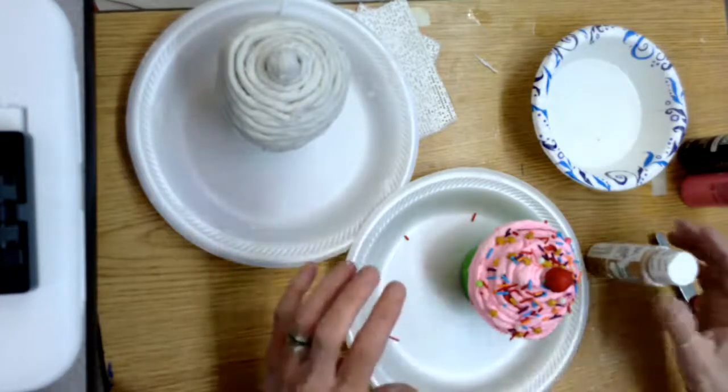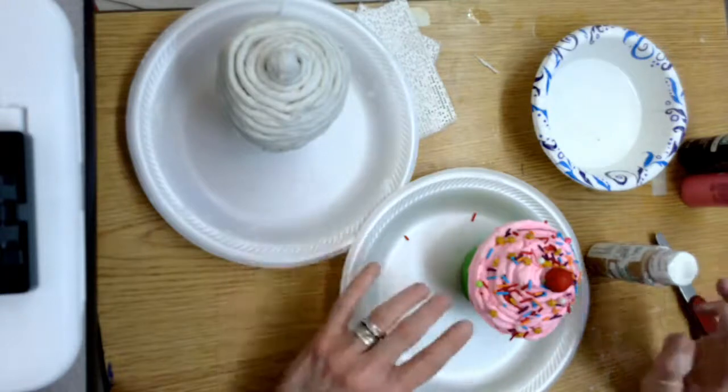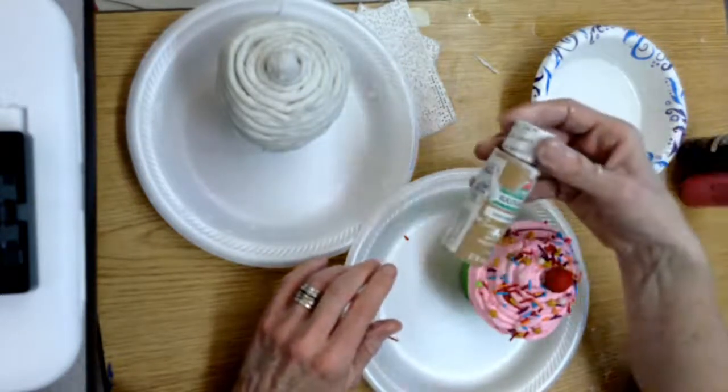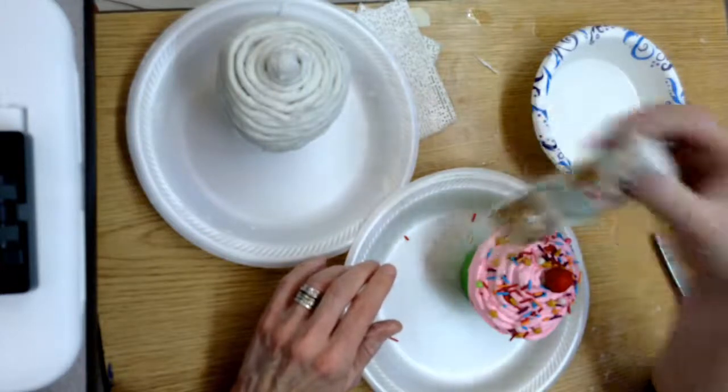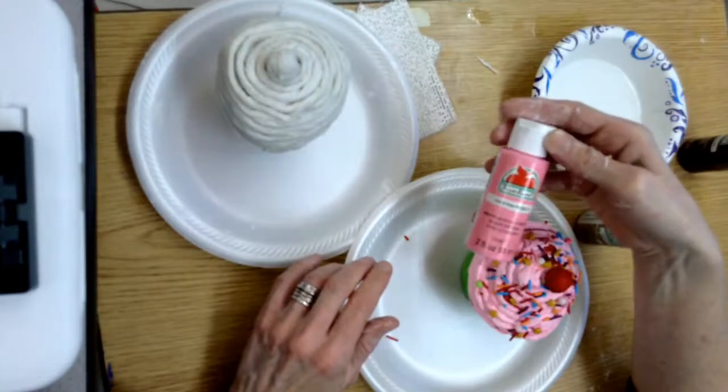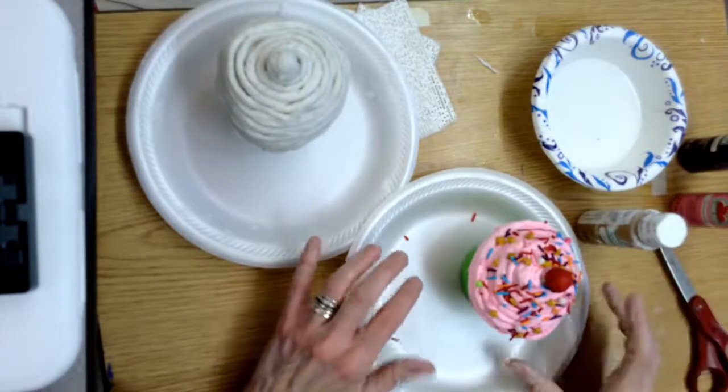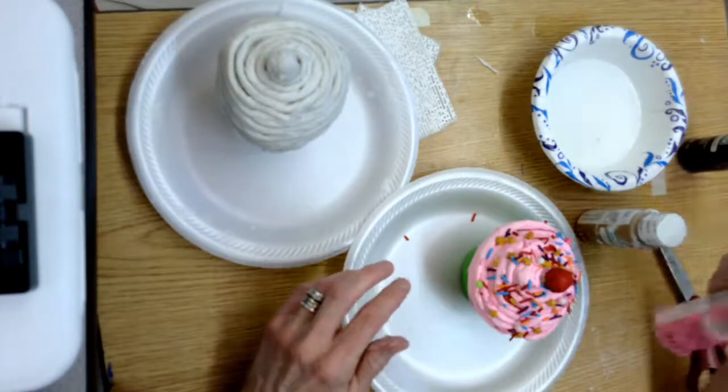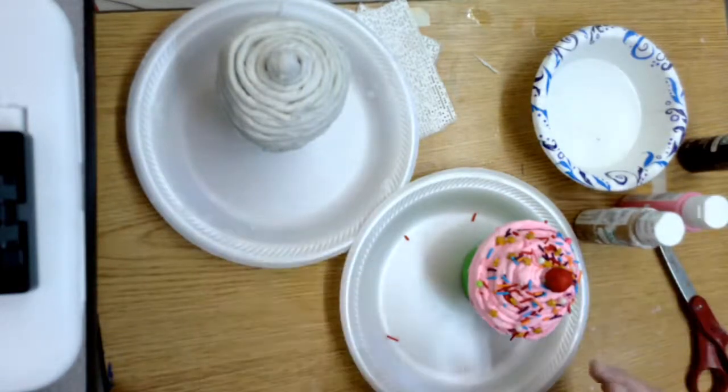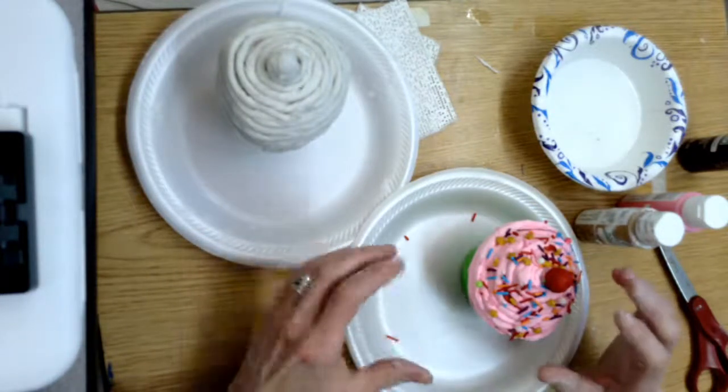So you can either use the paint that you have at home, unless it's watercolors. Watercolor will not work real well on this, but you can use this acrylic paint that you can buy at Walmart for 50 cents. And I mixed the colors a little bit because this was just way too pink, so I mixed it with a little bit of white. So you can either go to Walmart and get some paint that you want, use some paint you have at home, or if you can't find any paint you can email me and let me know what colors and I can put a little dollop in a container and put it outside for you.